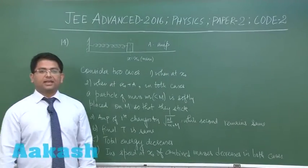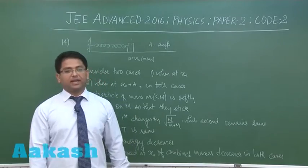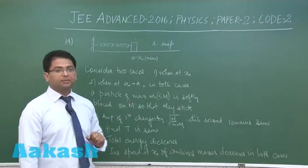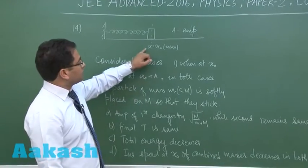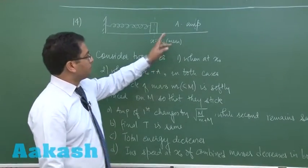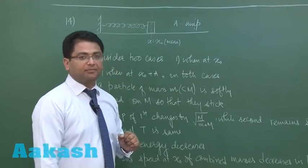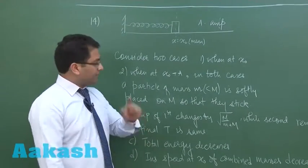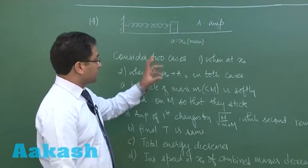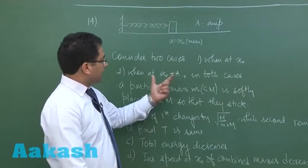Question number 14 is a very nice question made from simple harmonic motion. It is a spring block arrangement where x equals x0 is the mean position and A is the amplitude. Then it says consider two cases: when the block is at x0, that means at mean, and when the block is at extreme.